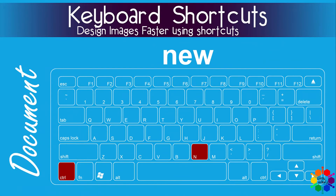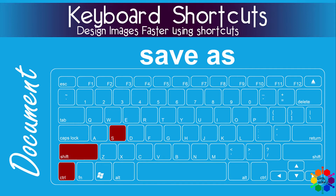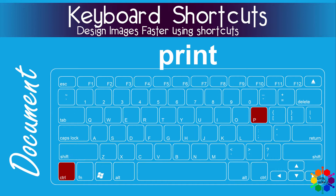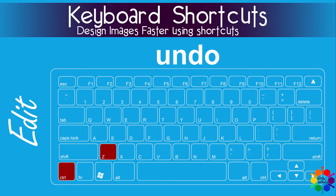The Document menu. New: Ctrl N. Open: Ctrl O. Save: Ctrl S. Save as: Ctrl Shift S. Print: Ctrl P. Send to Silhouette: Ctrl L.